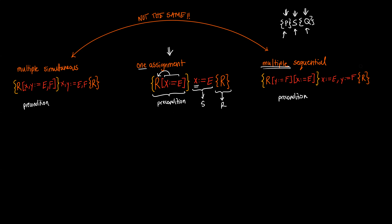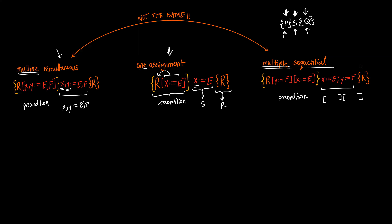You can also do multiple assignments with textual substitution. For multiple simultaneous assignments, you take two or more variables — in this case x and y — and assign them at the same time. You'll see this notation with x comma y mapped to e comma f, meaning replace all occurrences of x with e and all occurrences of y with f simultaneously. For multiple sequential assignments, denoted with a semicolon, you perform them in order from left to right, since textual substitution is left associative.